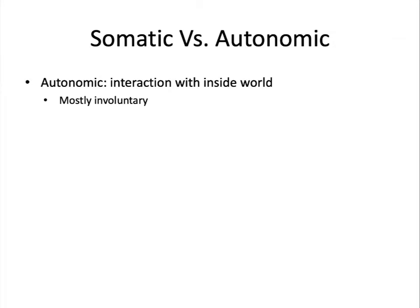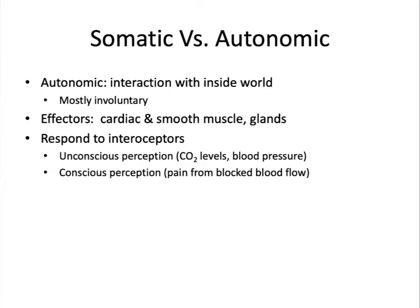The effectors in the autonomic motor division are cardiac muscle, smooth muscle, and glands. These effectors respond mostly to interoceptors — receptors that monitor conditions in the body. Much of this information picked up by interoceptors is unconscious, such as heart rate, blood pressure, and chemical levels. But some of it can be conscious perception, such as pain from cell damage.